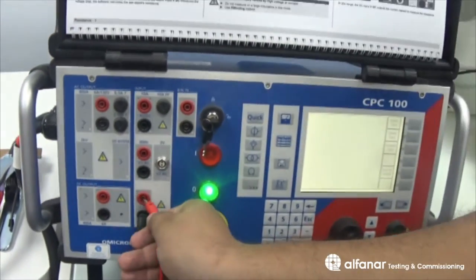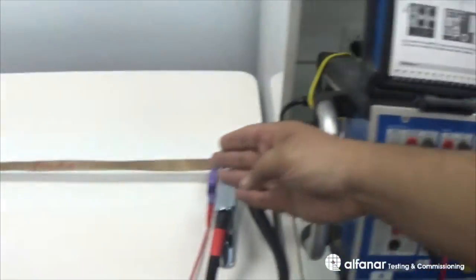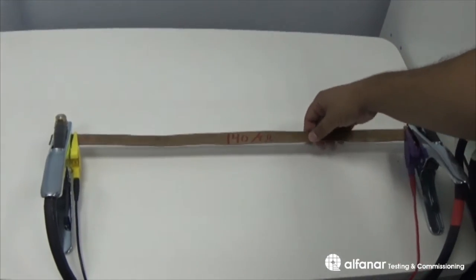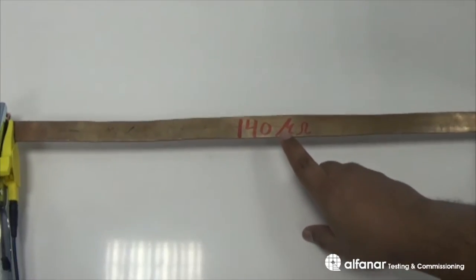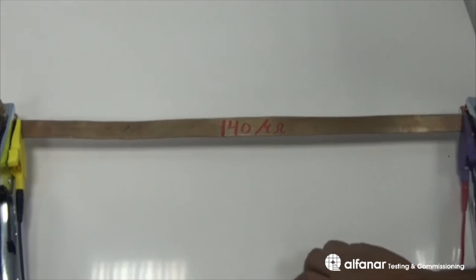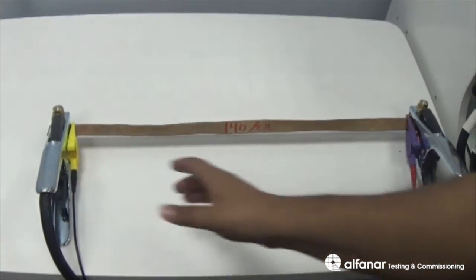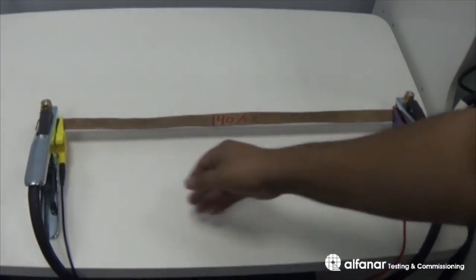Our connection will be as follows. Here we have the bus bar with 140 microohm. This is the calibrated value. Here is the current plugs and the voltage plugs.